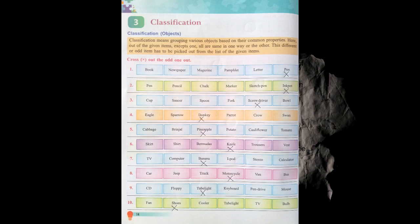Take out page number 14 — that is classification in objects. So what is the meaning of classification, students? Classification means grouping various objects based on their common properties. We call it the odd one out.